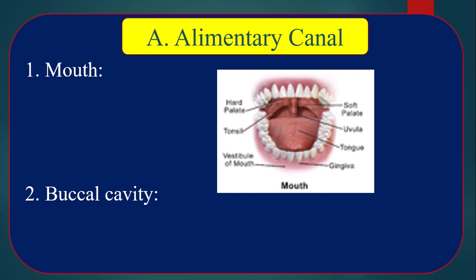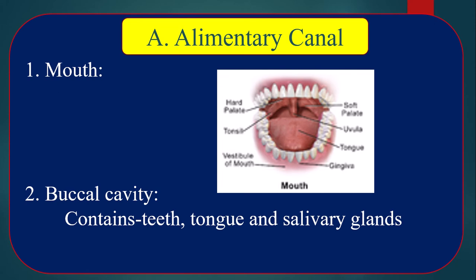The buccal cavity contains teeth, tongue, and salivary glands. They help to digest food directly and indirectly. Teeth help to cut and grind food into small pieces. The tongue's functions are to move food around the mouth for mastication and to taste. Salivary glands secrete enzymes and are located below the ear, at the side of the jaw, and below the tongue — six salivary glands in total around our buccal cavity.